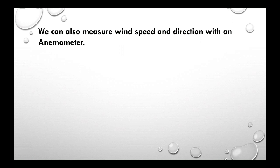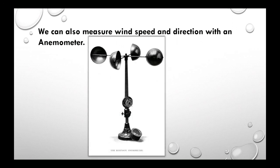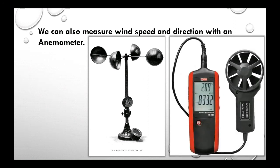We can also measure wind speed and direction with an anemometer. This is the anemometer used in earlier days to measure the speed and direction of the wind. This is the electronic anemometer which we can get now.